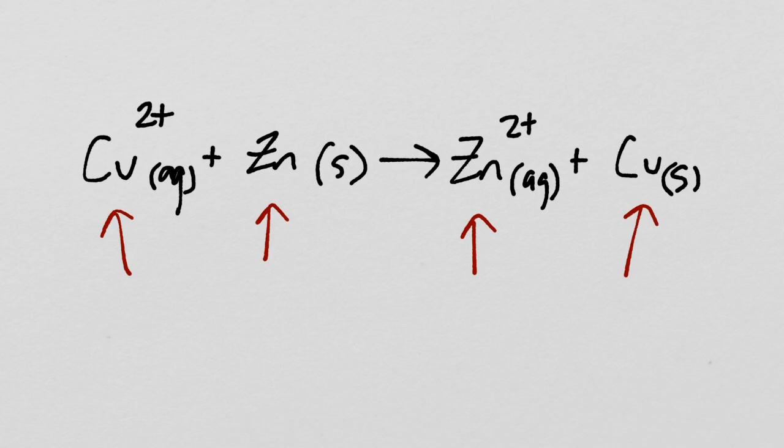How can we tell that there's an electron being transferred here? Well, take a look at copper. It's got a 2 plus charge on it. And then over here, after the reaction, it doesn't have any charge. So somewhere in this reaction, copper gained two electrons. It had been missing two electrons with a 2 plus charge. And now it's gained them back.